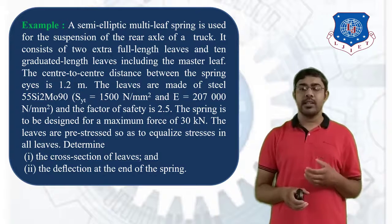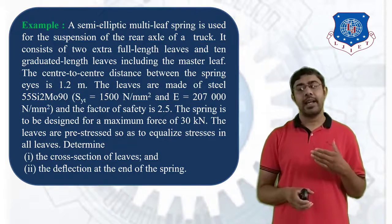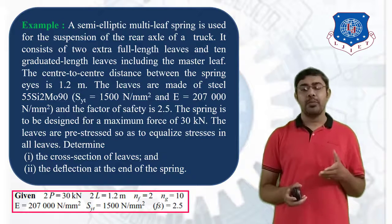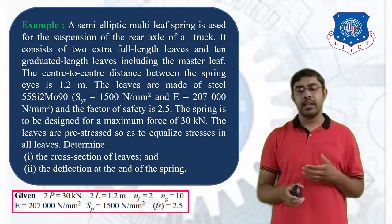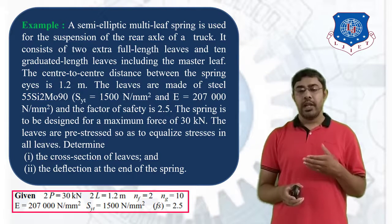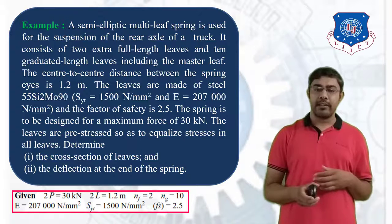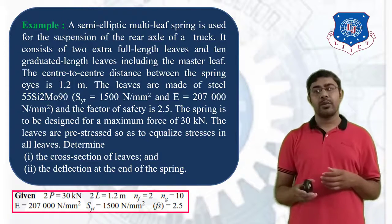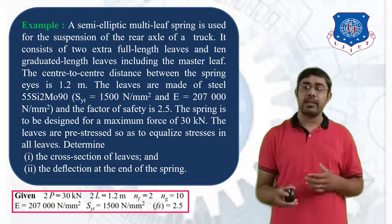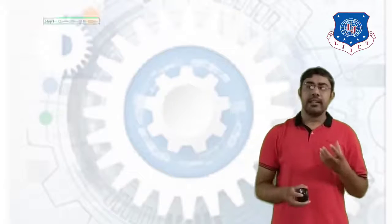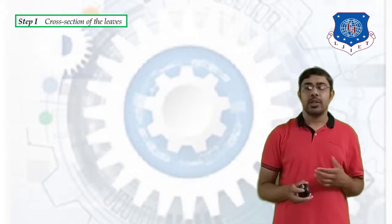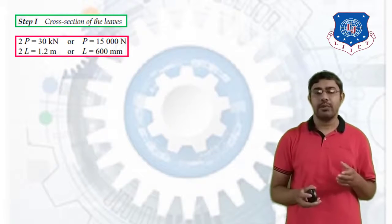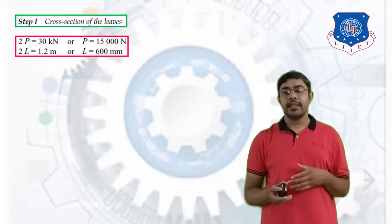Given data: 2P = 30 kN, so P = 15,000 N. 2L = 1.2 m, so L = 600 mm. NF = 2, NG = 10, total number of leaves N = 12. E = 207,000 N/mm², SYT = 1500 N/mm², factor of safety = 2.5.